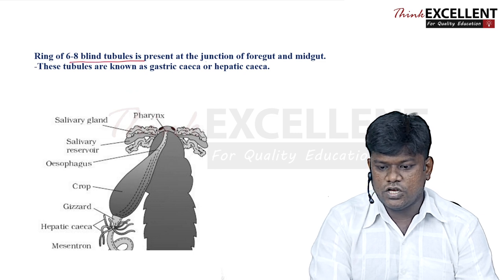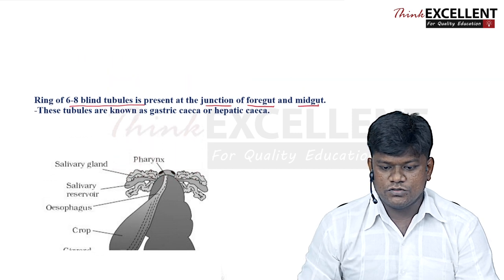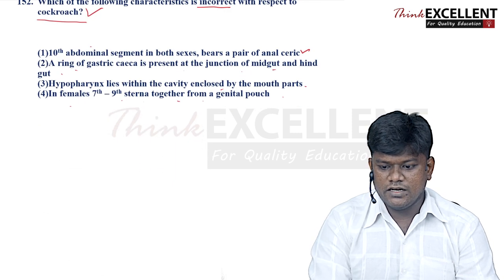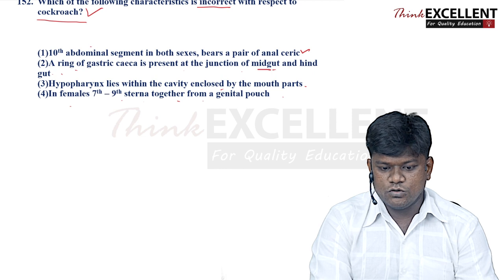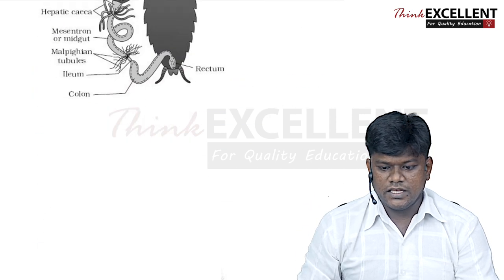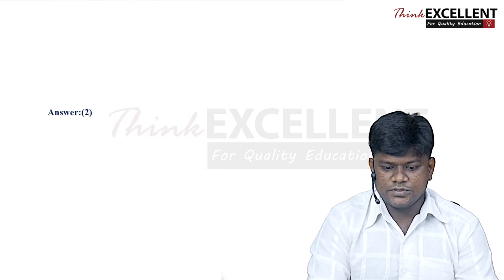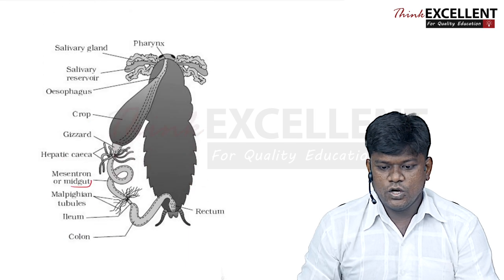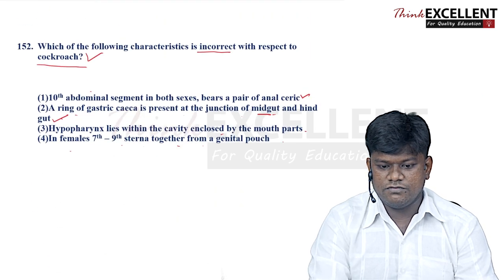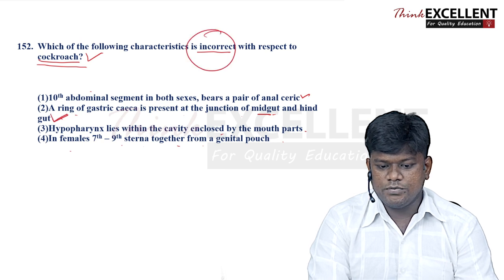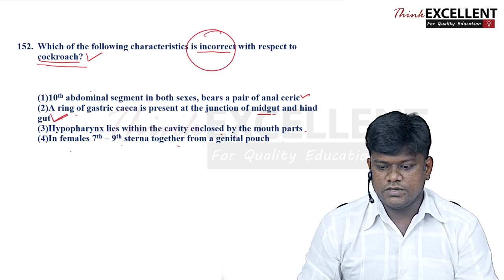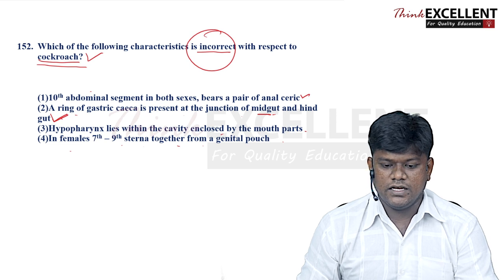The ring of gastric caeca — six to eight blind tubules — is present at the junction of the foregut and midgut, not the midgut and hindgut. From this structure we can confirm that option 2 is incorrect. So the incorrect option here is option 2: the ring of gastric caeca is present at the junction between midgut and hindgut.